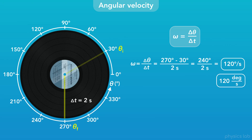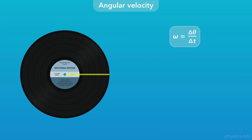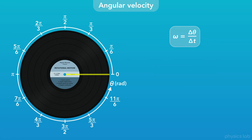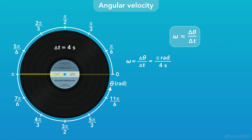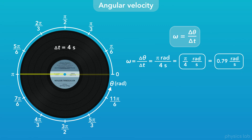That means that every second, the record rotated 120 degrees. Degrees per second is one unit we can use, but the SI unit for angular velocity is radians per second. So let's change the units on our axis to radians. If this record rotates half of a revolution in 4 seconds, then the angular velocity of the record was π radians divided by 4 seconds, or π/4 radians per second. That's about 0.79 radians per second in decimal form.